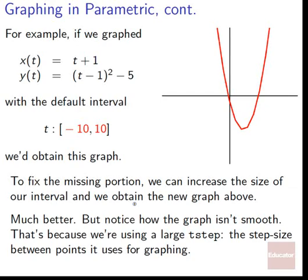To fix the missing portion, we increase the size of our intervals to obtain this new graph. So if we switch to t going from -10 to 10, it would now go actually past the edges of our viewing window. And we've completely filled what our viewing window can see of this graph. So that's much better.